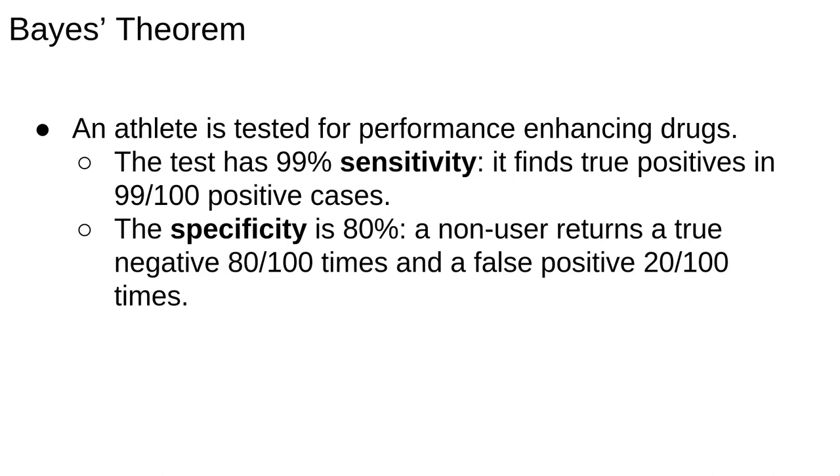Secondly we know the specificity is 80%. Specificity measures the proportion of negatives that are correctly identified. That is, if we give this test to non-users, roughly 20% of them will return a positive test. Another way to say this is that the false positive rate is 20%.